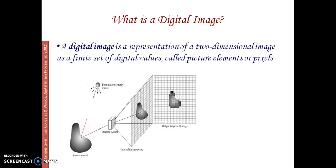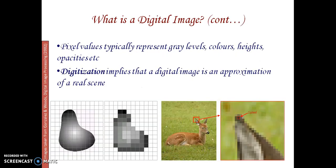What is a digital image? A two-dimensional image with a finite set of digital values is called pictures, or picture elements, or PELS. We capture an image under sunlight or illumination. The output is the internal image plane and the digitalized image. Each digital value is represented as pictures or PELS. Picture values typically represent gray levels, colors, heights, and opacities. Digitalization implies that the digital image is an approximation of a real scene.